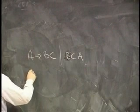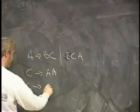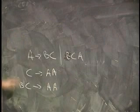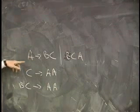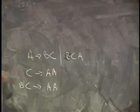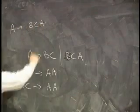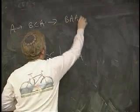When there's a single non-terminal on the left, it's called context-free. Because, imagine when you're doing a derivation, A goes to B, C, A, and now I can do C goes to A, A. So, B, A, A, A. This is a non-context-free derivation,